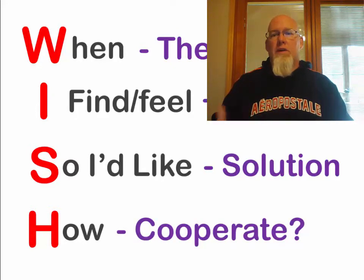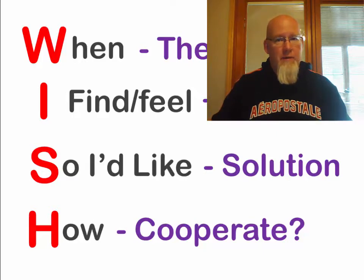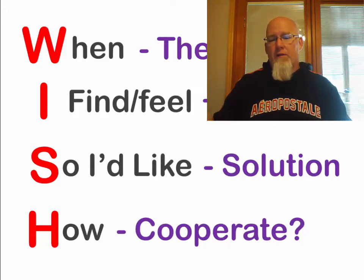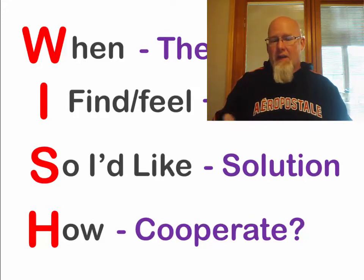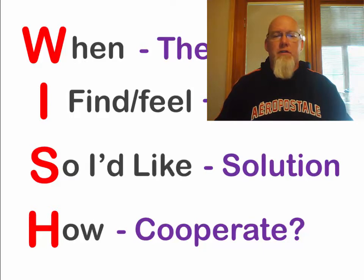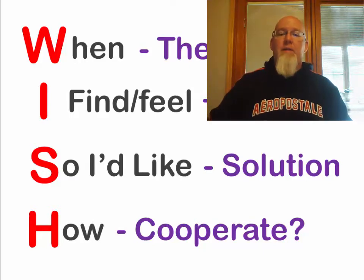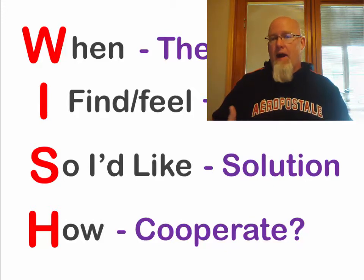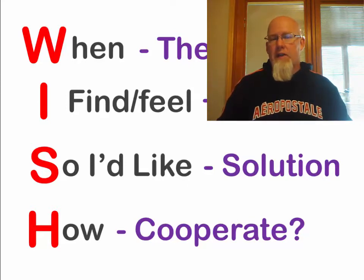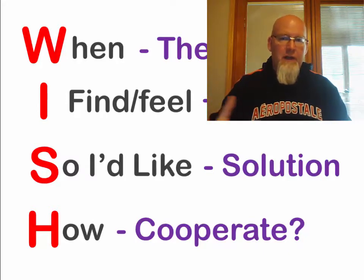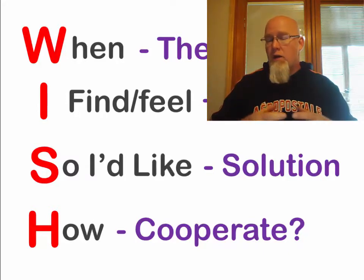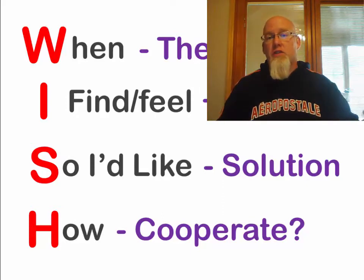The 'How' is how can we work together on this, or how can I help this situation be better — how can you help me from overreacting, or whatever fits the situation. There may be situations where that works and some where it doesn't, but if you can be part of the solution, that's where the 'How' comes in. So WISH is a quick mantra: when this happens, I feel this, this is what I'd like, and how can I help make this easier. That's how you use assertive communication and I-statements without verbally attacking the other person.